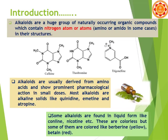Alkaloids are usually derived from amino acids and show prominent pharmacological action in small doses. Most alkaloids are alkaline and solid, like uridine, imidine, and atropine. Some alkaloids are found in liquid form, like coniine and nicotine. These are colorless, but some are colored — like berberine which is yellow and betanine which is red.